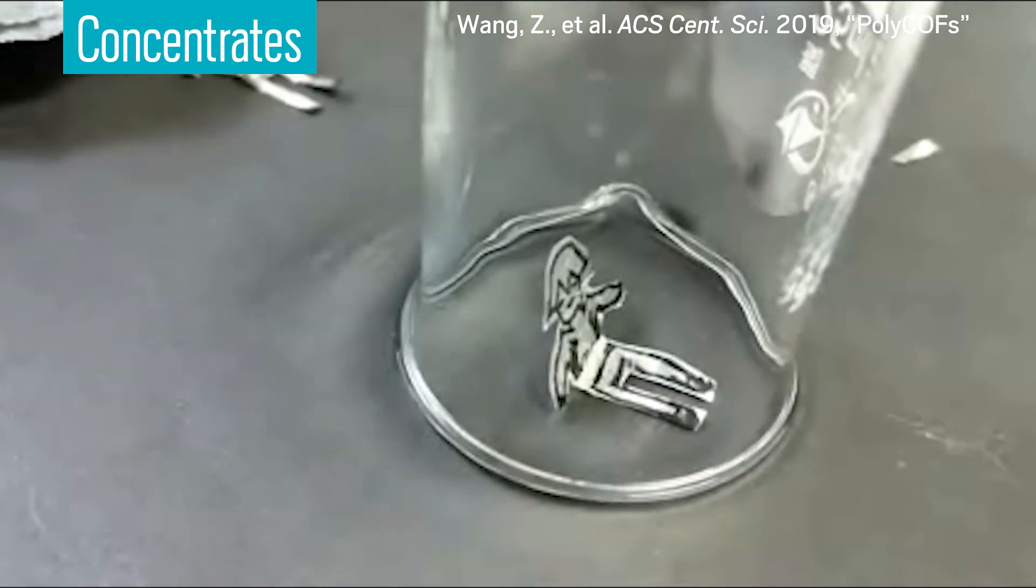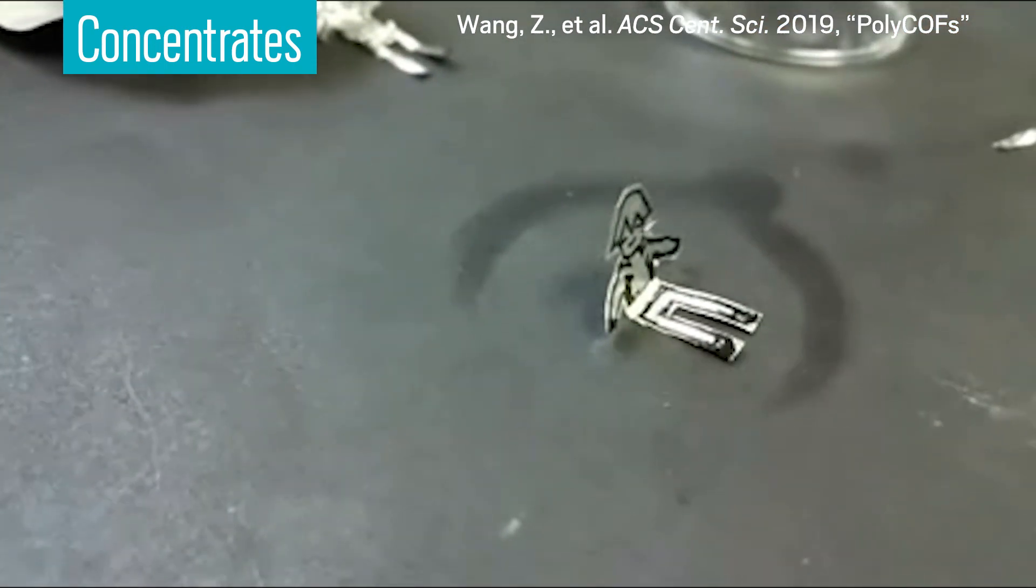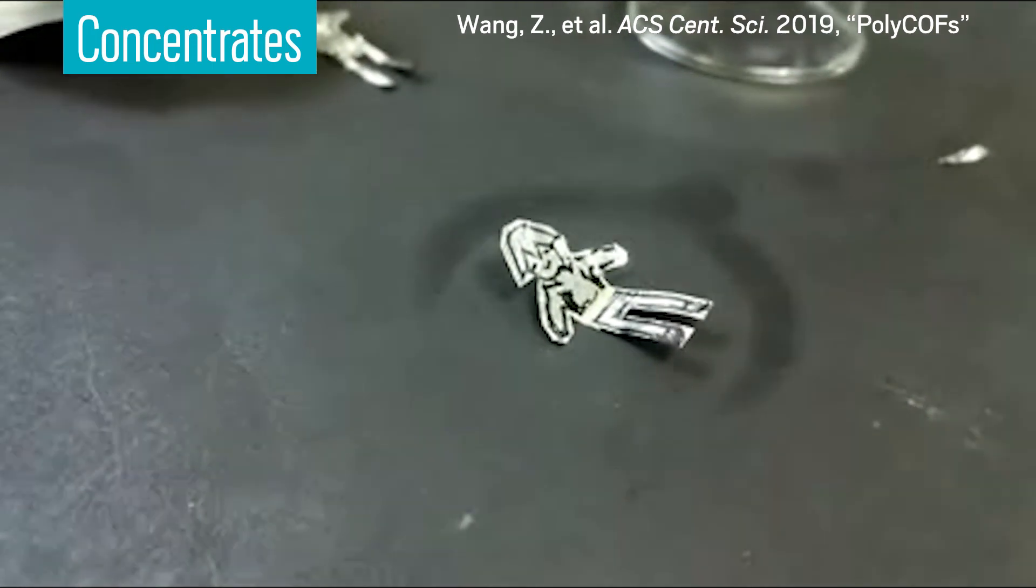This doll can perform tiny sit-ups thanks to a material in its waist that bends when it absorbs certain chemical vapors. But the researchers who made the material have bigger plans for it than making a doll do calisthenics.